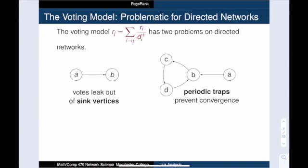So let's talk about what goes wrong with the voting model in directed networks. The first problem is a sink vertex, which is a vertex that has no out-neighbors. The importance in a sink leaks out of the network, which leads to whole areas of the network with zero values.